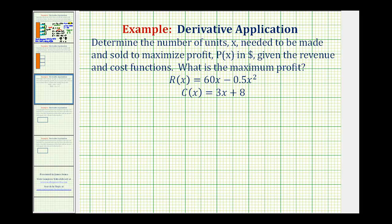So the first thing we have to remember here is that the profit is going to be equal to the revenue function minus the cost function. So p of x is going to be equal to the revenue function, which is 60x minus 0.5x squared, minus the cost function, which is the quantity 3x plus 8.